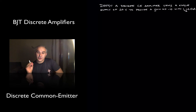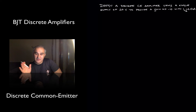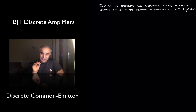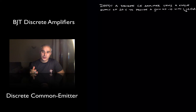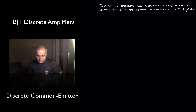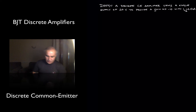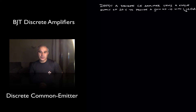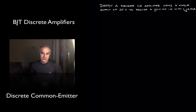Hello, in this video I'm going to show you how to design common emitter amplifiers in discrete transistor applications. In later videos we are going to show how to do this for integrated circuit applications. Our objective is to design a common emitter amplifier using a single power supply of 20 volts to provide a gain of minus 10 with a quiescent current of 0.5 milliamps.